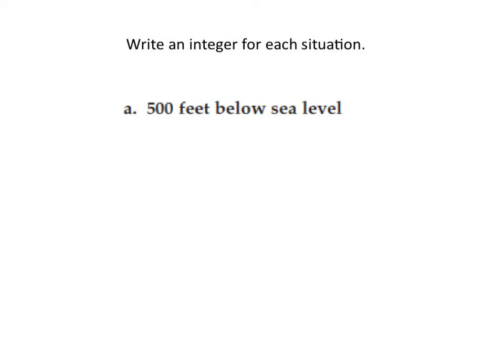Let's go to our first problem: write an integer for each situation. In A, 500 feet below sea level. The word 'below' indicates that it is a negative number, so we write negative 500 feet. The negative sign in front tells us that it's below sea level.